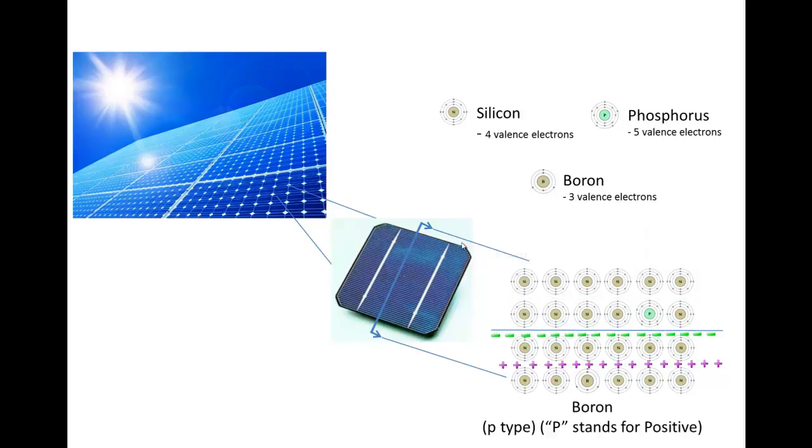Those extra electrons are going to migrate down towards the extra holes. And there I've got now my P-N junction and my permanent electric field.